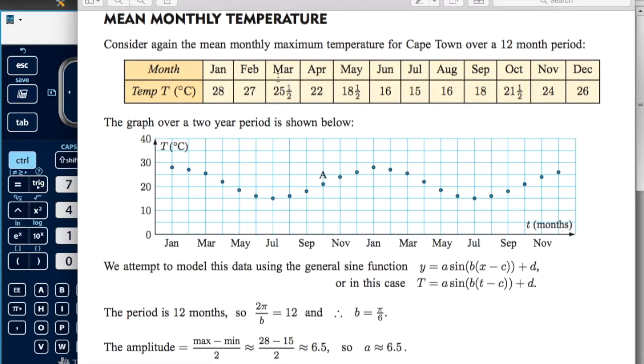Here we've got every month, January to December, and their mean temperature. So we want to find the sine function that models that.